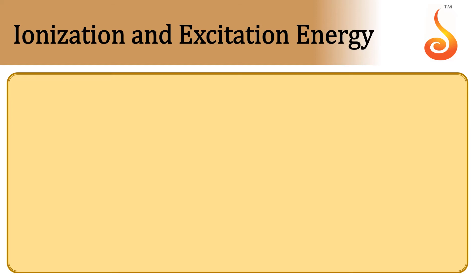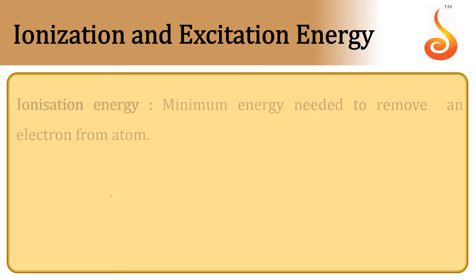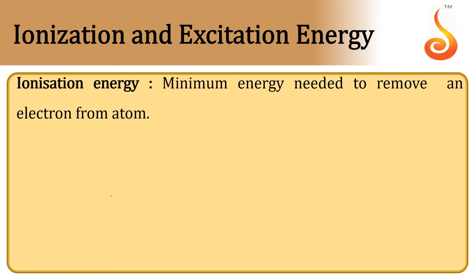Ionization and excitation energy. What is meant by ionization energy? Ionization energy is the minimum energy needed to remove an electron from an atom. For example, if you are talking about a hydrogen atom, if an electron is revolving in the first orbit, it is bounded by the nucleus with minus 13.6 electron volts.